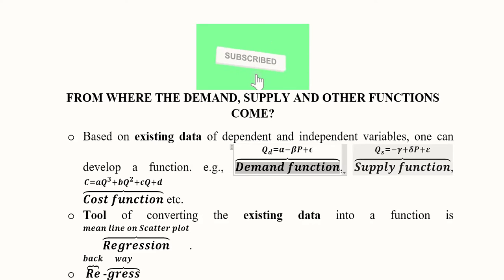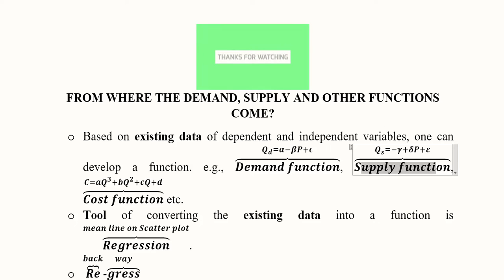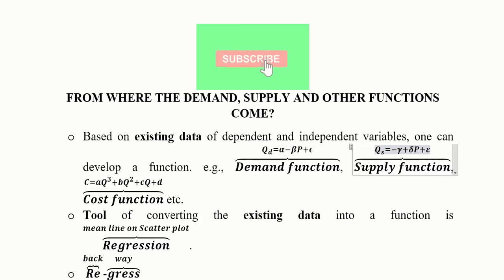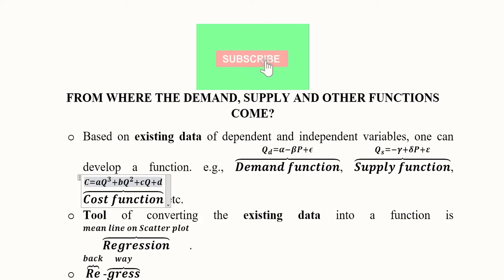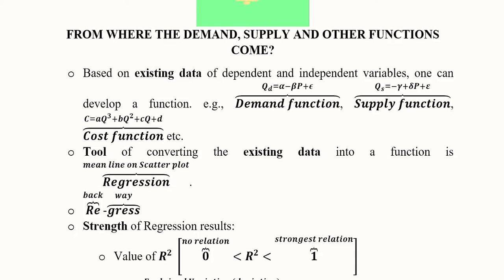The supply function can also be developed using this tool and software. Its standard form again includes an error term in addition to price, slope, and intercept. We also have the cost function, which has a cubic specification — the degree of the equation is 3 — and this too can be developed using the regression tool and software.